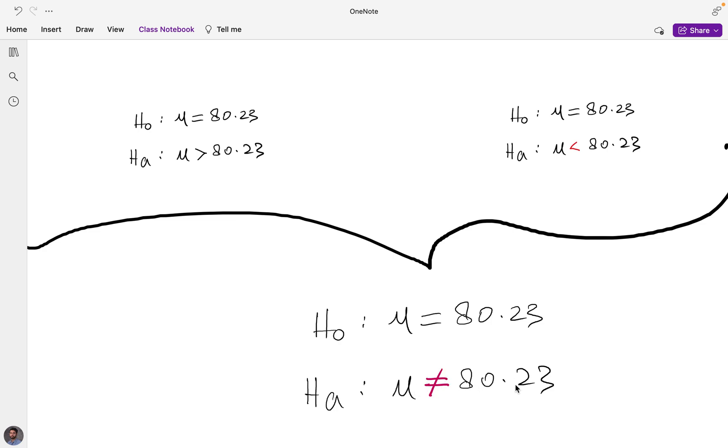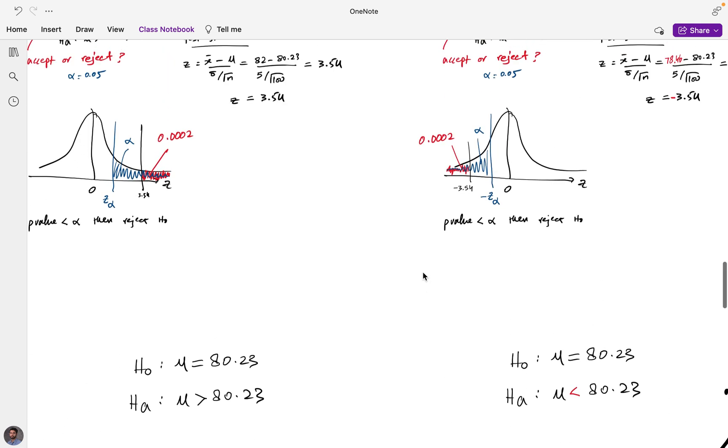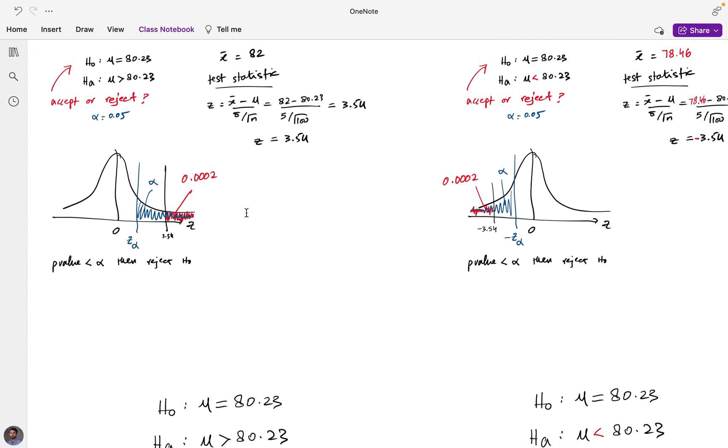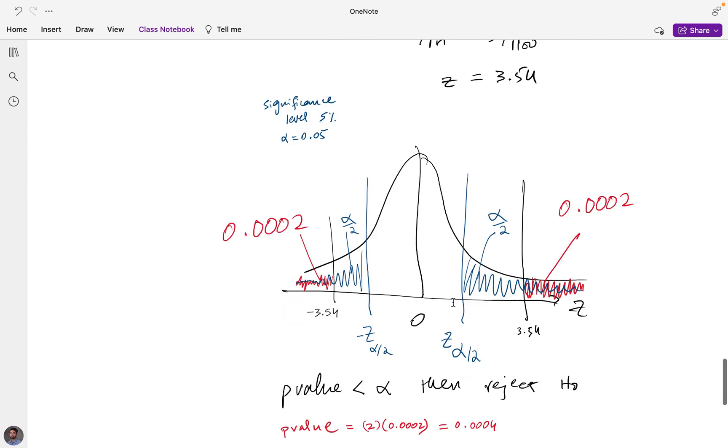So this then handles both sides. If it's not 80.23, it could be greater than 80.23 and it could be less than 80.23. So meaning it could handle both cases by just setting the alternative hypothesis like this. And what this then transpires into is a normal distribution that takes care of both of these tails together.